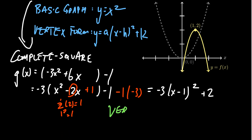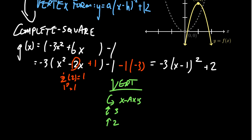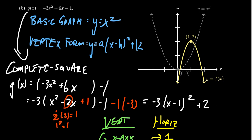Now in vertex form, we can see the vertical and horizontal transformations. The vertical transformations are: a reflection across the x-axis, a stretch by 3, and a shift up by 2. The horizontal transformations: the minus 1 inside means a shift to the right by 1. This helps identify the vertex of the parabola — shifted up by 2 and to the right by 1, so the new vertex is (1, 2). The graph is concave downward because it was reflected across the x-axis, and stretched by a factor of 3 so it looks skinnier.